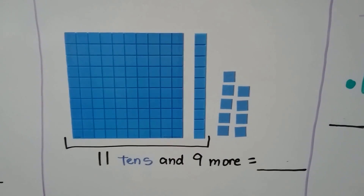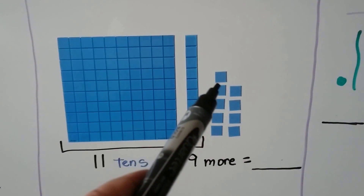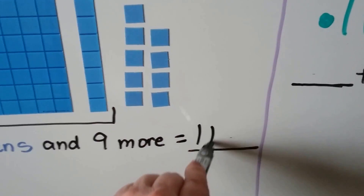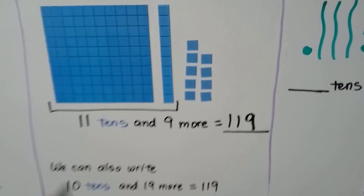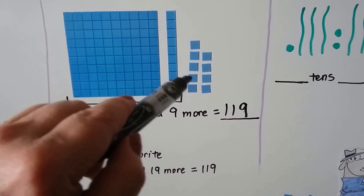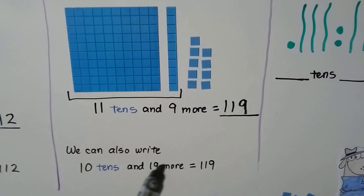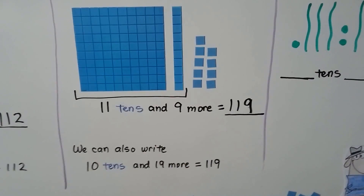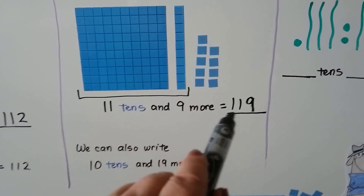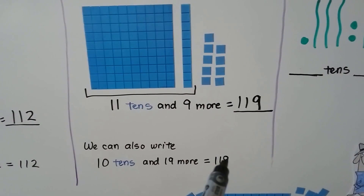Here we have 11 tens and 9 more. We have 10 tens, 11 tens, and 1, 2, 3, 4, 5, 6, 7, 8, 9 more. We have 11 tens and 9 more. We can also write 10 tens and 10, 11, 12, 13, 14, 15, 16, 17, 18, 19 more — it's the same thing. 10 tens and 19 more is the same thing as 11 tens and 9 more. We're just counting this 110 right here with all of these 11 tens, or we're counting 10 tens to make 100 and then 19 ones.